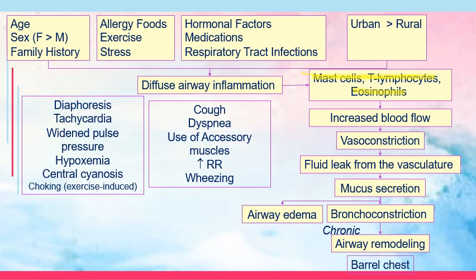What are the signs and symptoms? Common is cough, then dyspnea, use of accessory muscles, increased respiratory rate, and wheezing — characteristic for asthma. In the long run, the patient may have diaphoresis, tachycardia, and widening of the pulse pressure. Recall that pulse pressure is the difference between systolic and diastolic blood pressure. The patient would have decreased oxygen saturations — hypoxemia — and then central cyanosis. Oftentimes they also say they are choking, especially in exercise-induced asthma.